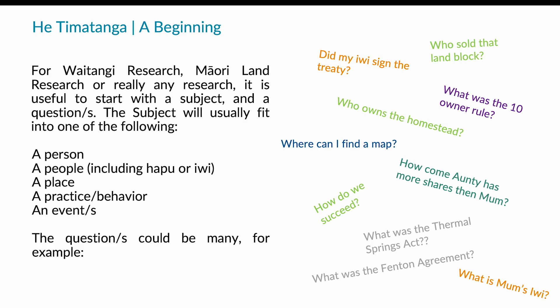The questions could be many. For example, here are a few that have come up over the years: Did my iwi sign the Treaty? Who sold that land block? What was the ten-owner rule? Who owns the homestead? Where can I find a map of that area? How come auntie has more shares than mum? What was the Thermal Springs Act? What was the fencing agreement? What is mum's iwi and what's dad's iwi? Questions provide focus and the impetus to track information that answers them — they keep you going forward.